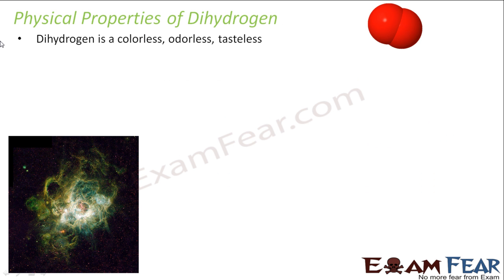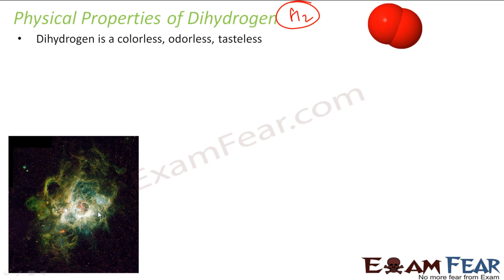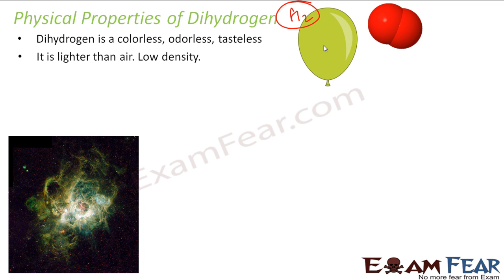The first physical property is that dihydrogen is colorless, odorless, and tasteless. I'm finding the physical properties of dihydrogen, that's why I have kept this dihydrogen molecule here. This is the picture of hydrogen gas in space — you see there is no color, there is no taste, there is no smell.